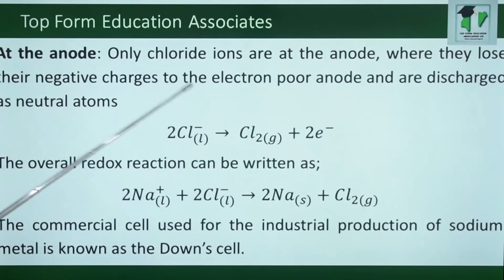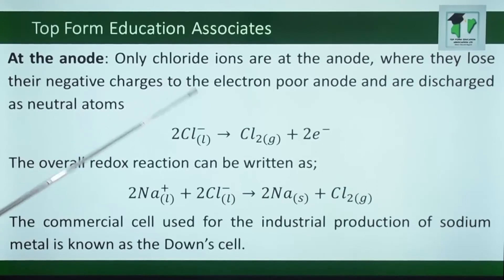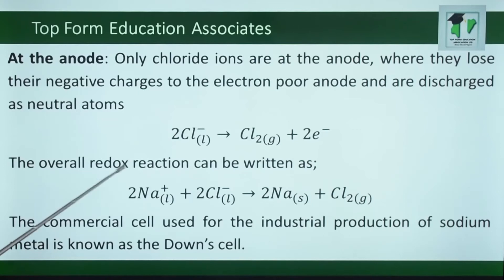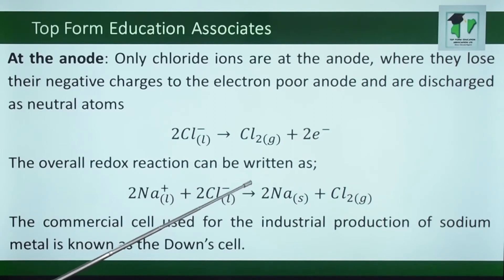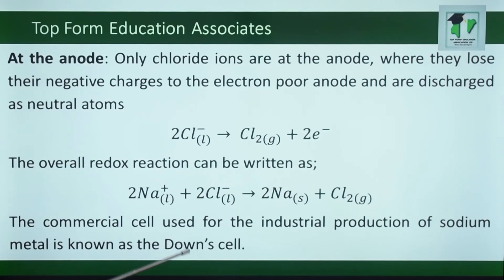Then at the anode, only chloride ions are present, where they lose their negative charges to the electron-poor anode and are discharged as neutral atoms. The overall reduced reaction can be written as: sodium ion plus chloride ion to give solid sodium and chlorine gas. The commercial cell used for industrial production of sodium metal is known as the Down cell.